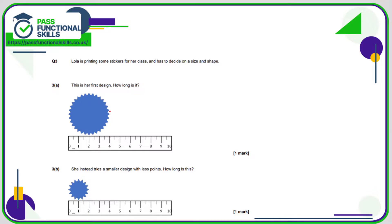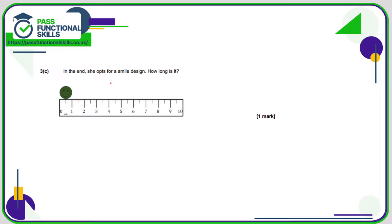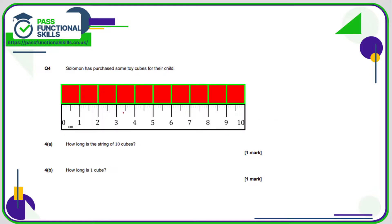This one's kind of hard to read because this part here is not tight to the ruler, so I would imagine they would accept 6.3 or 6.4 for this one. For 3a, that's probably 4 or 4.1 centimeters. This one I would say was 2 centimeters. 3c, that's one centimeter. How long is the string of 10 cubes? Well, you can see it's 10 centimeters long, so one cube is one centimeter.